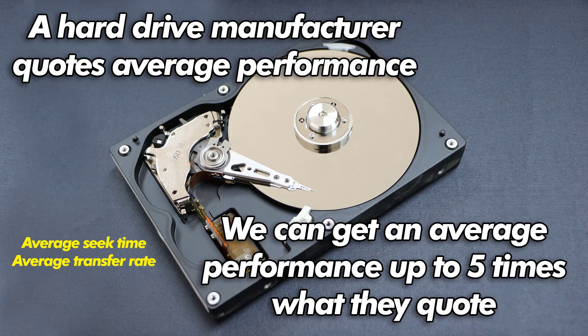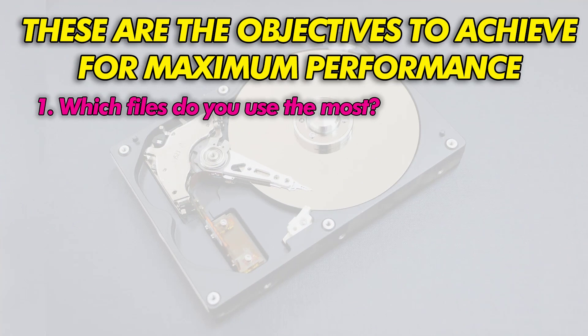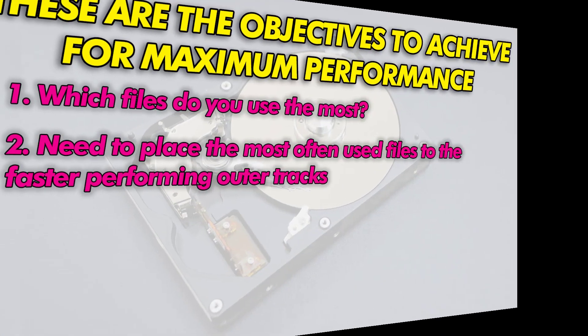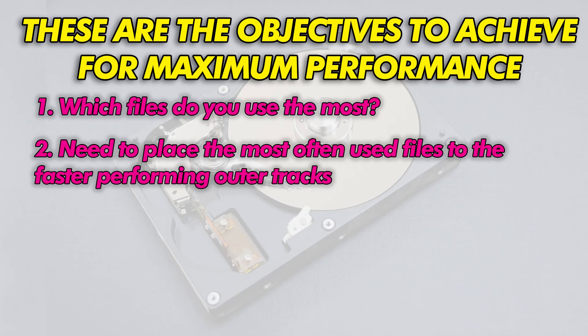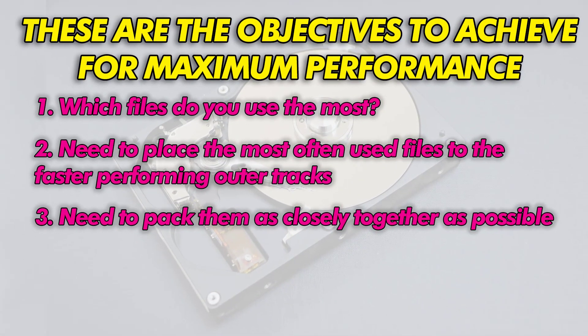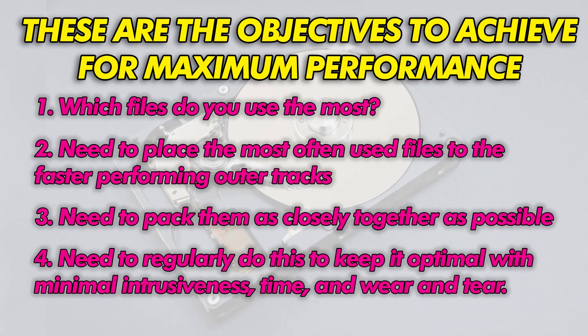So in an ideal hard drive world and taking these five important points into account, you want to achieve the following state so that your hard drive is performing at 500% of factory quoted performance at the raw level. One, you want to know which files you use the most. Two, you need to defragment those files and place them on the faster performing outer tracks of your platter where the file data transfer rate is the highest. Three, you need to pack them as closely together as possible, which is maximizing seek confinement to give you lower access times. And four, you need to regularly do this to keep it optimal with minimal intrusiveness, minimal time, and minimal wear and tear on your drive.